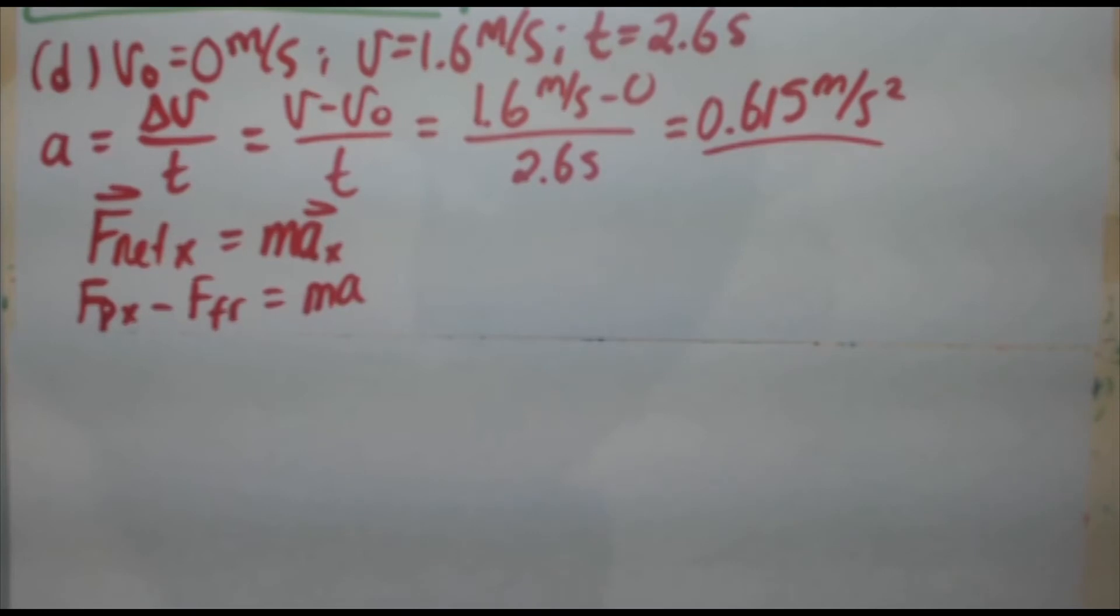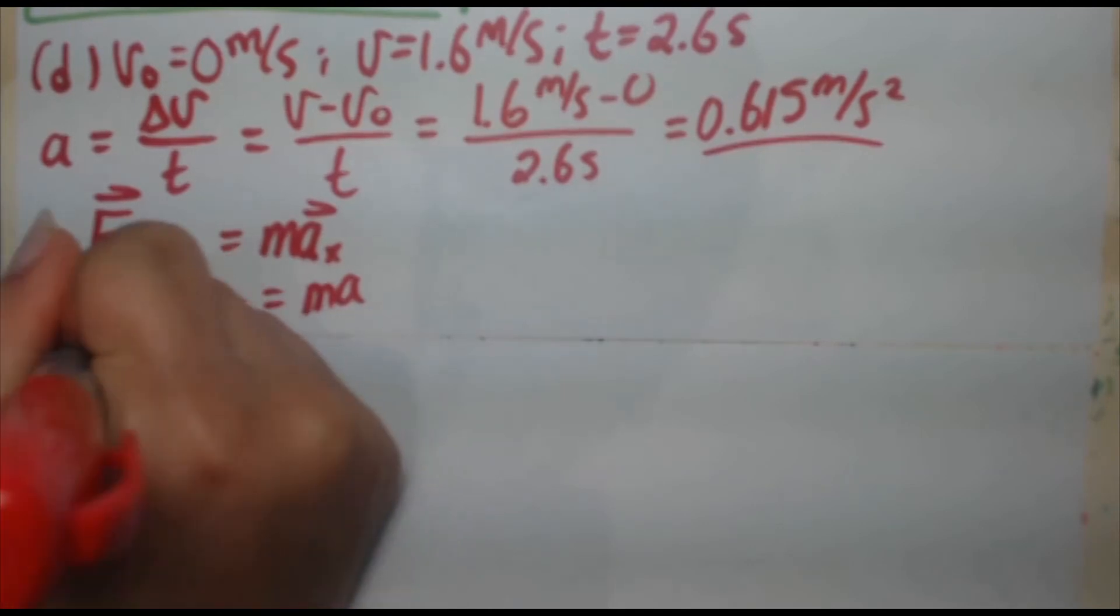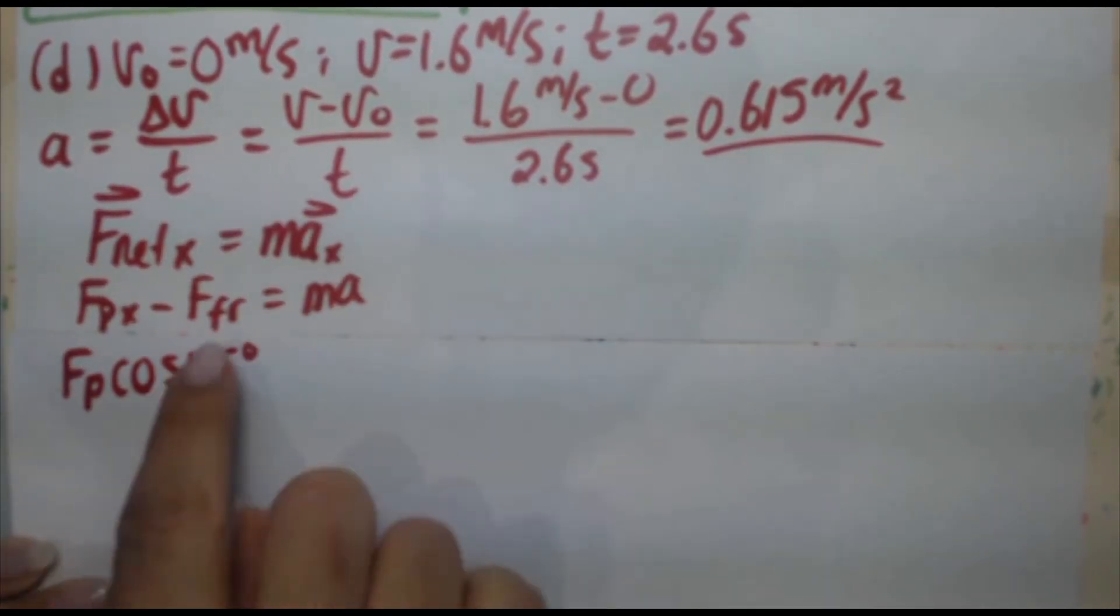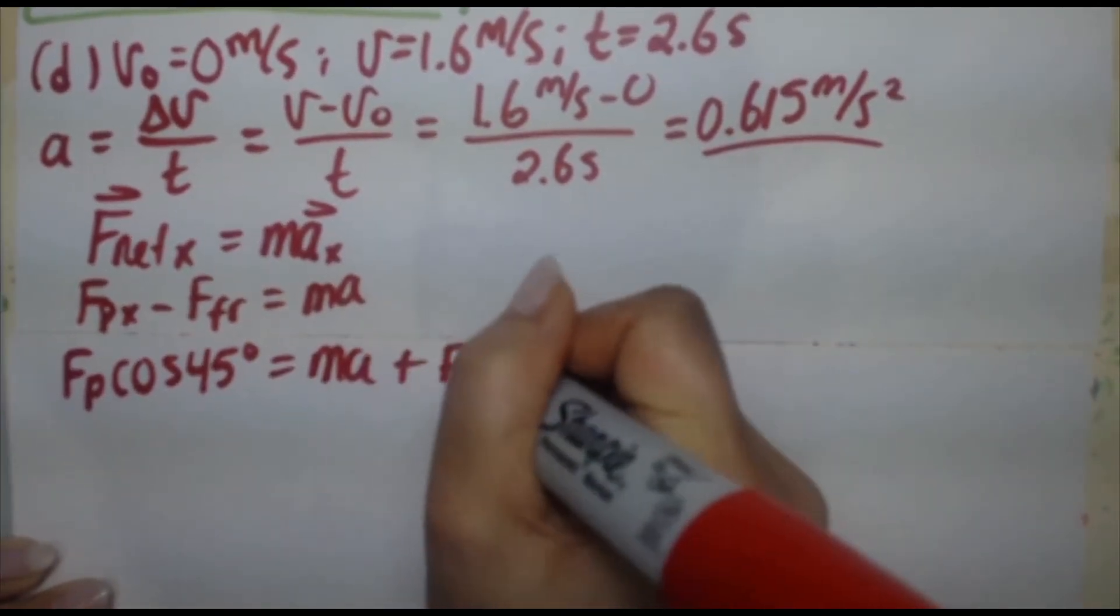Drop the vector symbols because we've put in our directions. Now FPX, remember, it's FP cosine of 45 degrees. And I'm going to bring the friction force to the right there equals MA plus F friction.